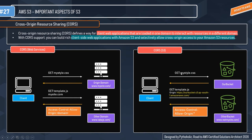In S3, CORS works similarly. You have the client and mystyle.css stored in your bucket — no problem. But for a template.js stored in another bucket at a different domain or origin, the request includes the origin path in the GET request. If CORS is enabled, you get the response back with template.js and avoid the CORS error. You can apply the same CORS configuration to S3 buckets. Whenever you see Access-Control-Allow-Origin, just remember CORS.